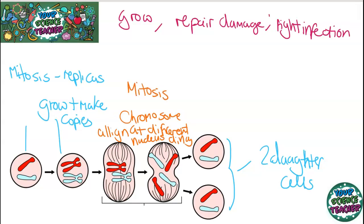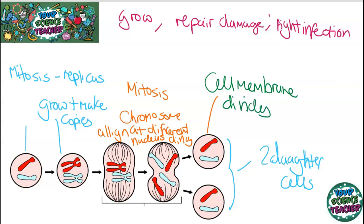Finally, the last stage of cell division is the breaking apart. This is when the actual cell membrane divides and you have the two daughter cells.